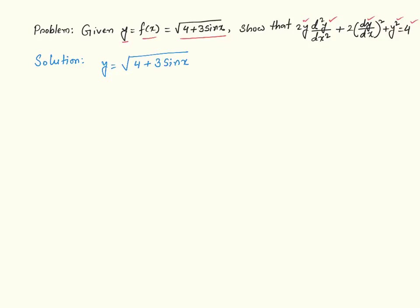Given this y value in terms of square root, the natural tendency is to take the derivative of both sides. However, if you do that, it is going to lead you to an expression that is more complicated and may not lead to the final answer very easily. So, we need to be a little bit creative here before taking the derivative. That creativity is basically to take the square of both sides.